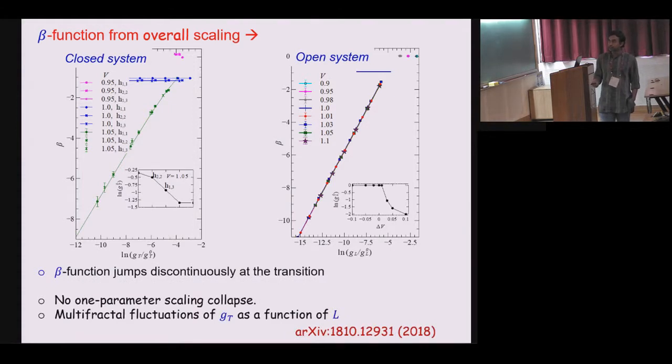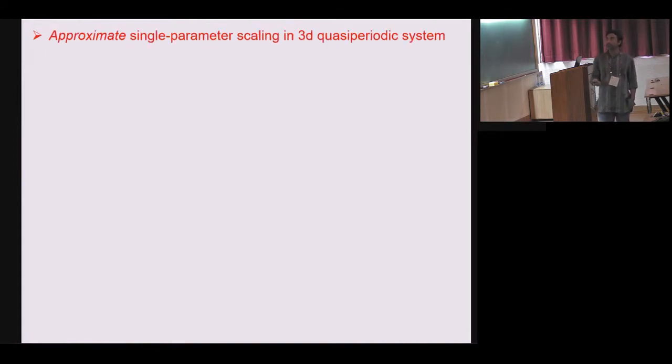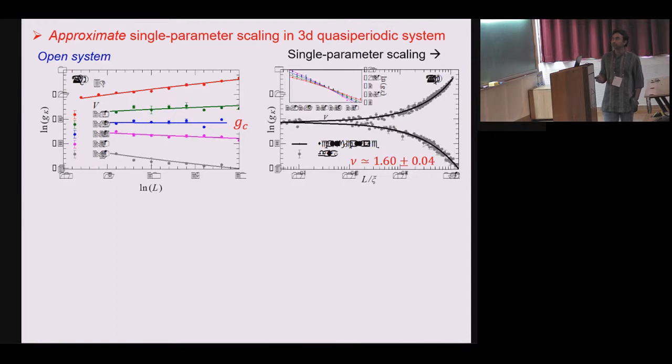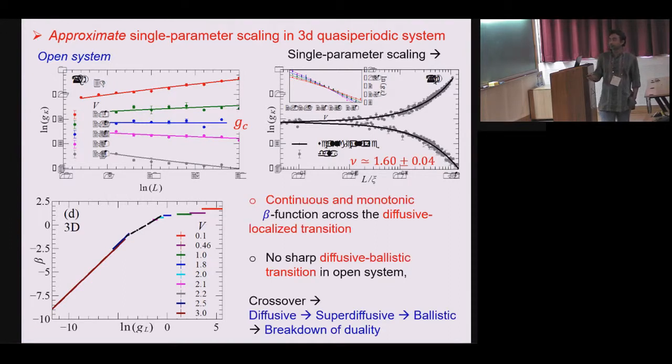You find similar results in 2D, again a similar jump through some sub diffusive critical state. However surprisingly what you find that if you go to three dimensions actually you recover single parameter scaling. What is shown here is just a data collapse near this localized diffusive transition where you can collapse the data and actually form a continuous monotonic beta function which describes this 3D transition and you get a very similar exponent as the 3D Anderson model.